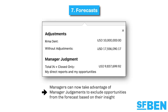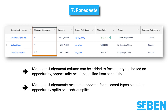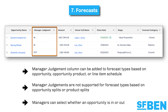In addition to adjustments, managers can now take advantage of manager judgments to exclude opportunities from the forecast based on their insight. The manager judgment column can be added to forecast types based on opportunity, opportunity product or line item schedule. Manager judgments are not supported for forecast types based on opportunity splits or product splits. With this additional column, managers can select whether an opportunity is in or out.